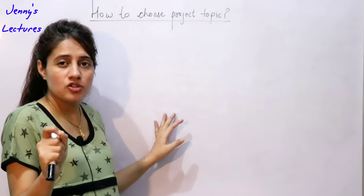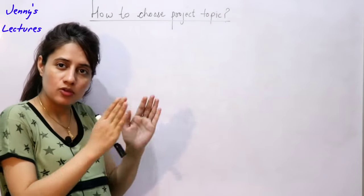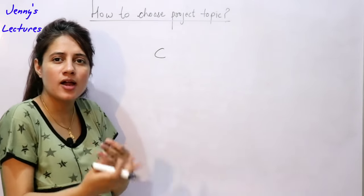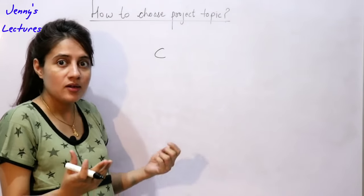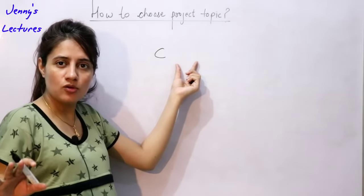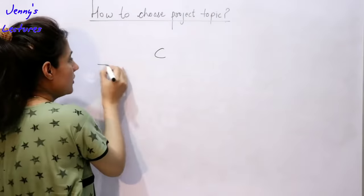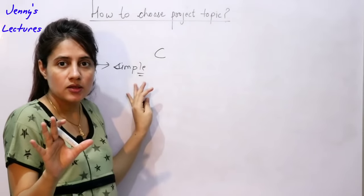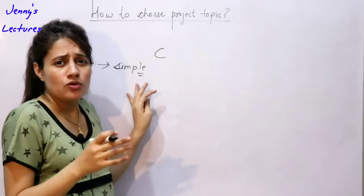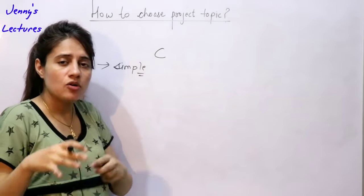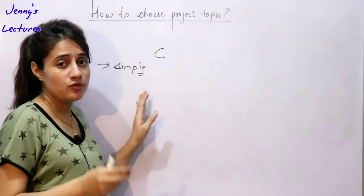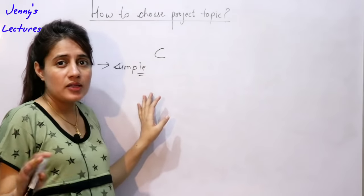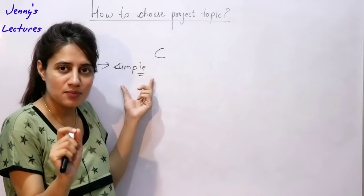So first tip: start working on a project as soon as possible. You have learned C language, maybe in first year or in 11th or 12th class, so start making simple projects. For beginners, try to choose a simple project. In the beginning, don't go for a complicated project, because if you are not able to complete it, you will get demoralized and think that you cannot do this.